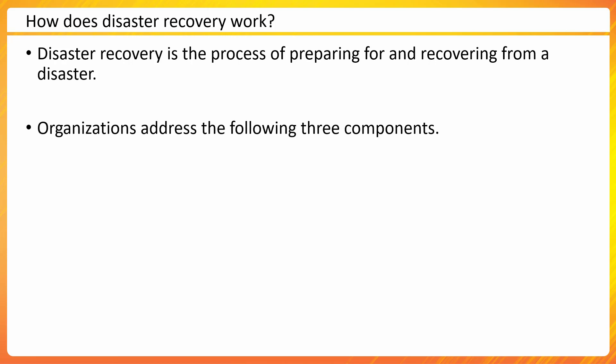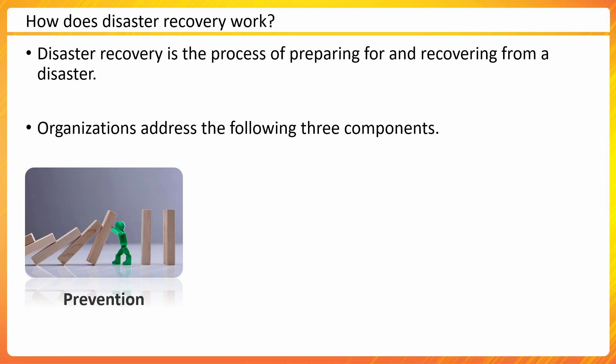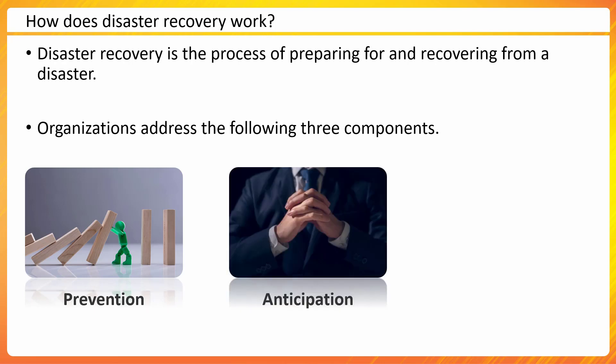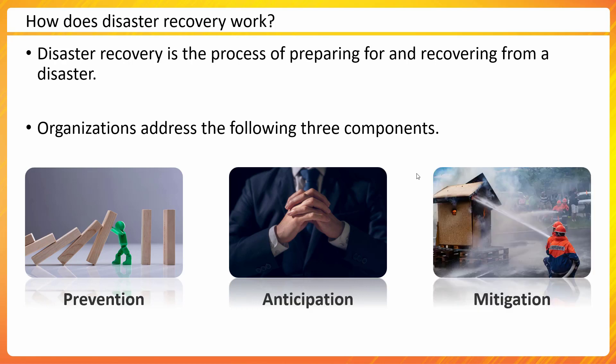Organizations address three components when it comes to preventing disaster. Prevention is one of them. They also have to anticipate what could go wrong and then prevent it from going wrong. And if it does happen, we need to have a mitigation plan too. For example, if there is a fire, we need to have a fire department who could take care of that — that's how we would be able to recover from it.